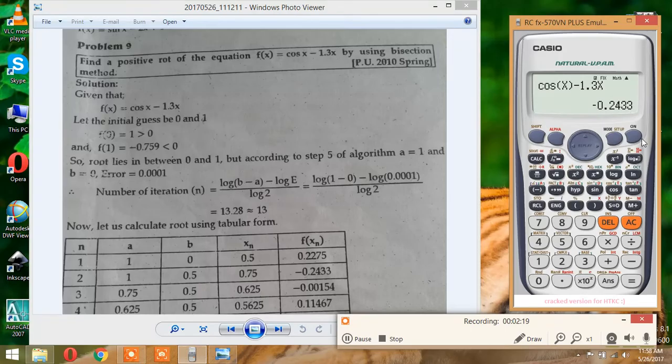So hit equal again. Here we write X. We get 0.65 and again equal, 0.0015. And again since that is negative we give a the value of X.